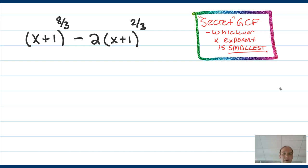Another example for you. So just like before, our secret greatest common factor is whichever x exponent is the smallest. So in this case, that's going to be the entire quantity x plus 1 to the 2 thirds. I'm going to encourage you right now to pause this video and write this problem on your paper. Try it out. See what you can do. Did you pause? I hope you did. Welcome back. Now we're going to solve the problem together.